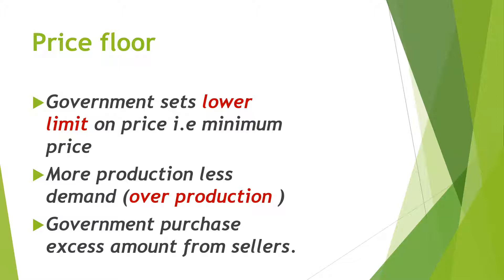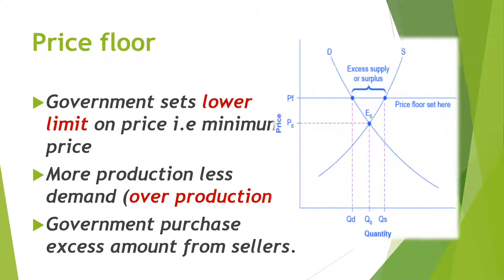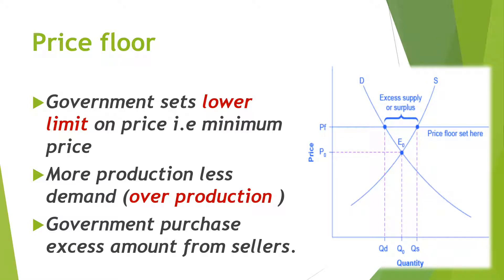This also applies to agricultural products. Sometimes production is very high, and because of excess supply, farmers are not able to get enough money to cover their costs. So the government sets a lower limit — a minimum price — below which farmers cannot sell their product. This minimum price protects farmers so their losses are not too great, and they receive some compensation.